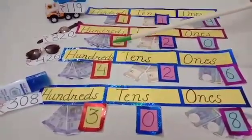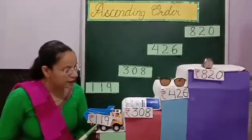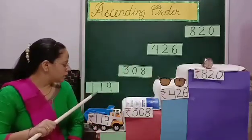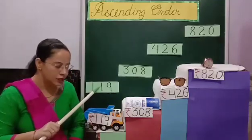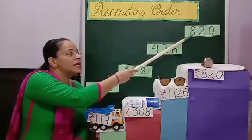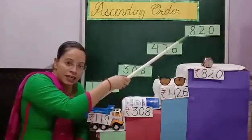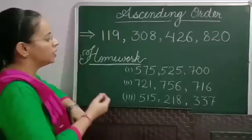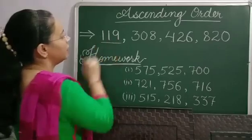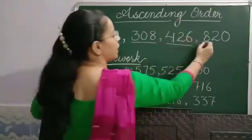Now we will learn how to arrange these numbers in ascending order. We paid the lowest price for the truck — that is 119. And the highest price for the watch — that is 820. So the numbers from these prices arranged from smallest to greatest are: 119 is the smallest, then 308, then 426, and the greatest one is 820. When we arrange numbers from the smallest to the greatest, it is called ascending order. So we have written 119 first, then 308, then 426, and the greatest one is 820.